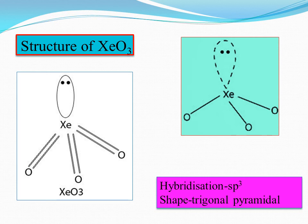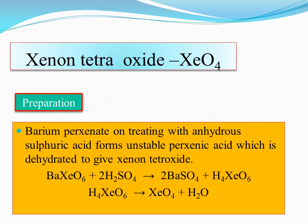XeO3 undergoes sp3 hybridization. Because of one lone pair of electrons, its actual shape is trigonal pyramidal — similar to ammonia, where nitrogen has one lone pair causing the molecule to adopt a trigonal pyramidal shape instead of tetrahedral.